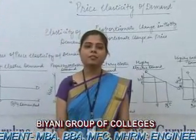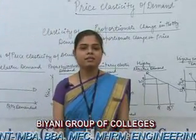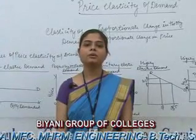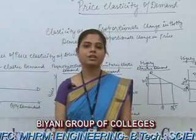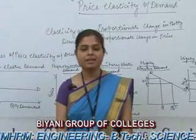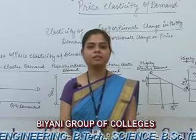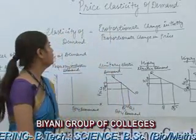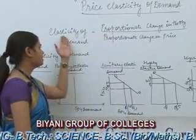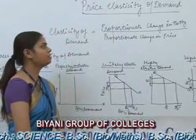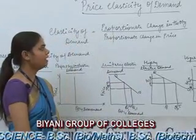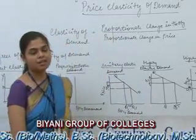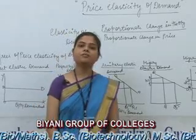Elasticity of Demand means percentage change in quantity demanded due to the percentage change in price. It can be expressed through the following formula: Elasticity of Demand equals proportionate change in the quantity divided by proportionate change in the prices.